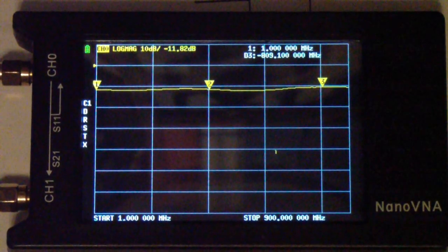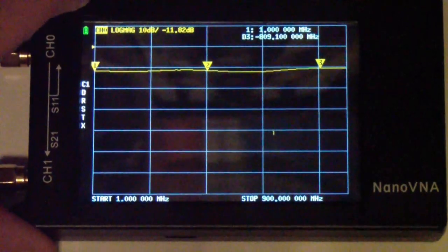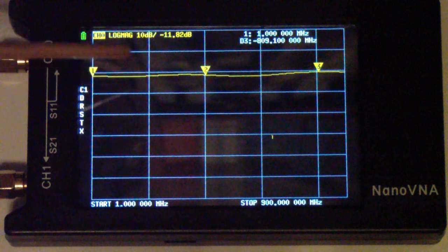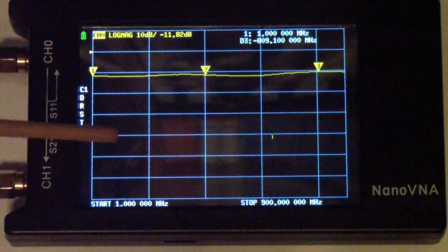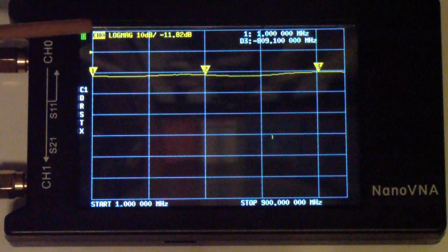So let's get back to the NanoVNA and what it's useful for. What you see is the H4 NanoVNA and channel zero is displaying log mag.